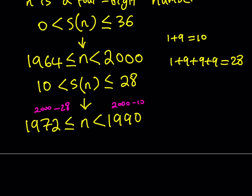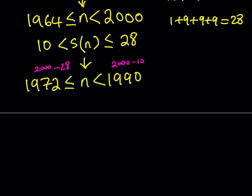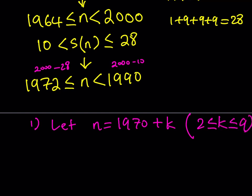So at this point, this is what I'd like to do. I'm going to split this problem up into two cases. First case is going to involve the 1970s. So let n equals 1970 plus k, where k is between 2 and 9 inclusive. This means that we're basically considering all the numbers that are 1972 through 1979.